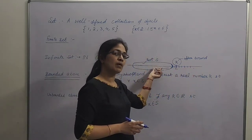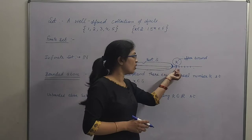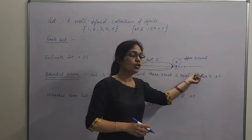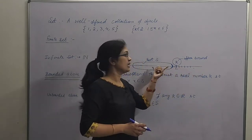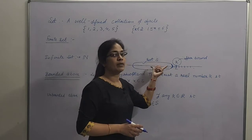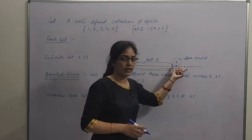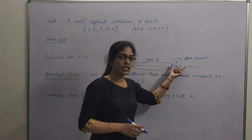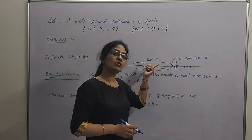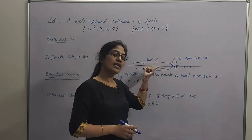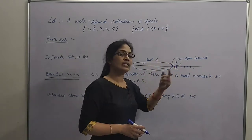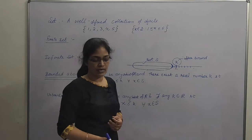Sirf yehi number iska upper bound nahi hai. Yahan pe jitne bhi numbers hain, ye sare set ke liye kya hain? Upper bounds. Or this set is bounded above by all these numbers. Kyo ki in sare numbers se is set ka har element chota hai. So agar hume kaisa number mil jaye jis se us set ke sare elements chote hon, then that set is said to be bounded above.